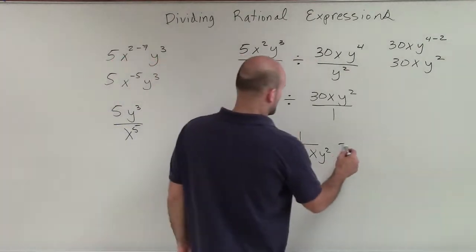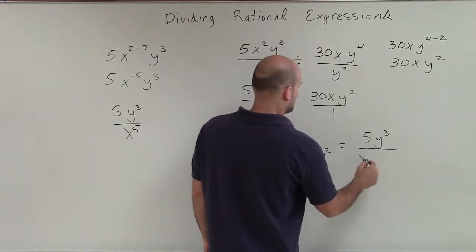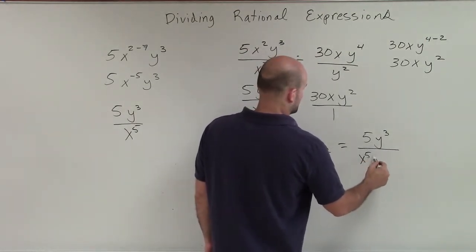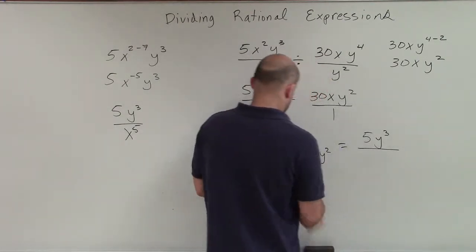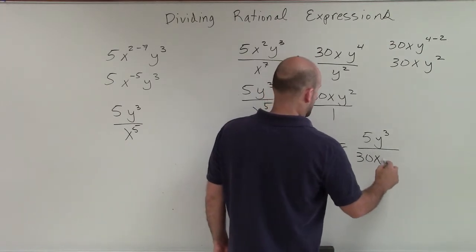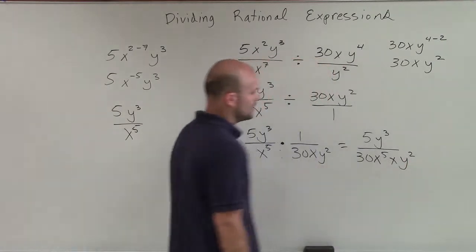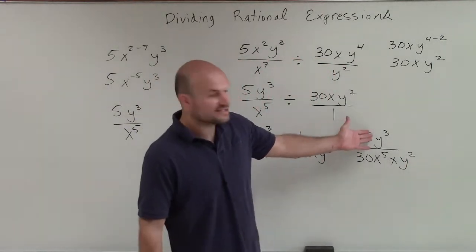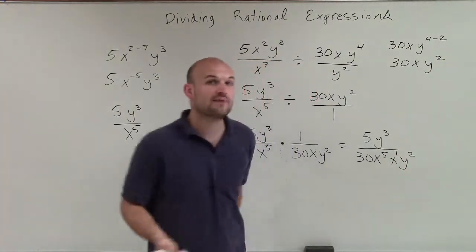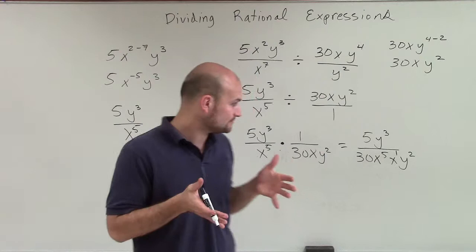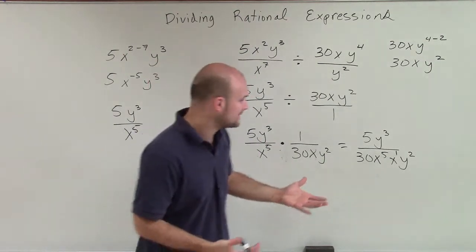Now, I can multiply these all across. So therefore, I have 5y cubed divided by x to the 5th times 30, now let's write the 30 in front, 30x to the 5th times x times y squared. Notice I don't have any x's in my numerator. So I can just multiply these two x's. And remember, this can be rewritten as an x to the first power. And remember, when multiplying, when you have the same base with exponents, you're going to add the exponents.